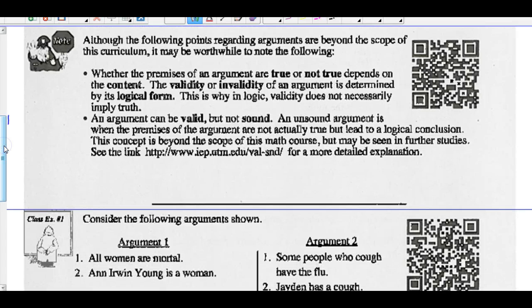Whether the premises of an argument are true or not true depends on the content. The validity or invalidity of an argument is determined by its logical form. This is why in logic, validity does not necessarily imply truth. An argument can be valid but not sound, and an unsound argument is when the premises of the argument are not actually true but lead to a logical conclusion. This concept is beyond the scope of the course, but may be seen in further studies if you wish to look.